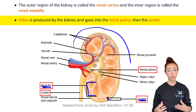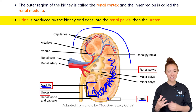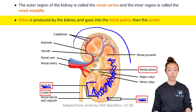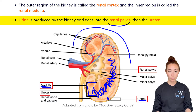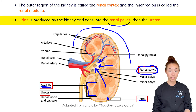Urine is produced in the meat of the kidneys, and we're going to dive into those structures in a lot more depth next. Generally, the urine produced by the kidney is going to drain into the renal pelvis. The renal pelvis is located right here — it's this open region where all the urine being produced drains into.